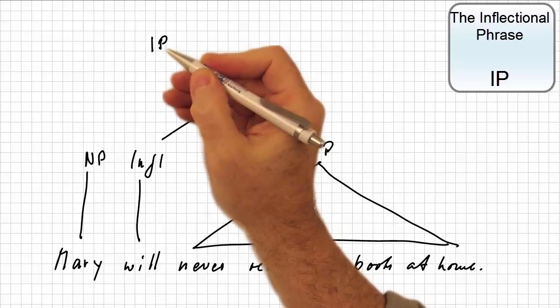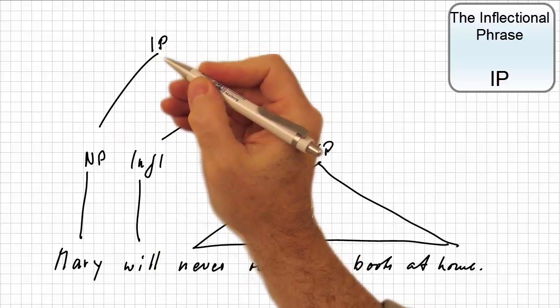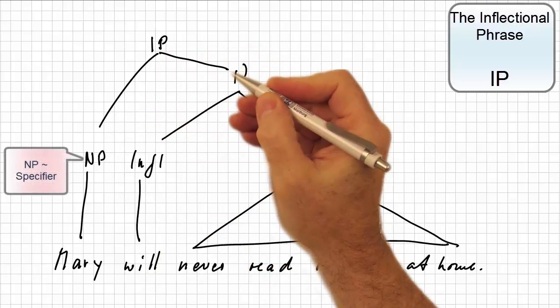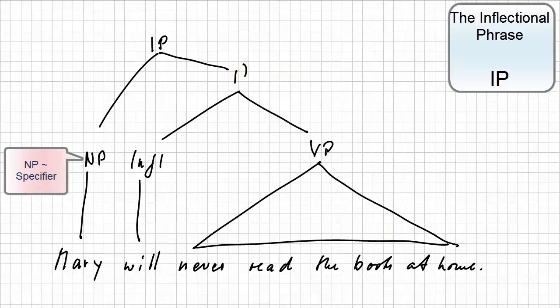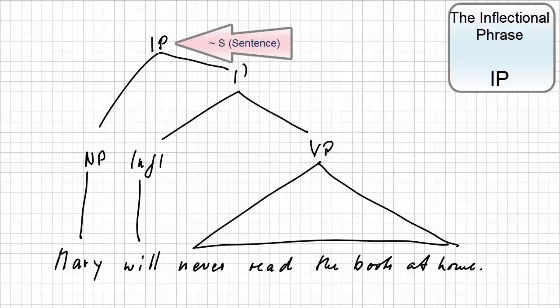The whole sentence then is the inflectional phrase with the subject NP functioning as its specifier. Thus, an inflectional phrase is essentially the same as a sentence, but it now strictly follows the x-bar scheme having a head, the inflection.